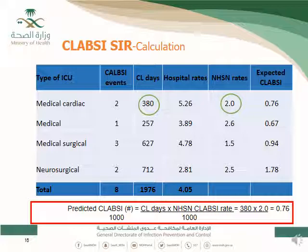Applying the same calculation to medical ICU gives 0.67, medical surgical gives 0.94, and neurosurgical gives 1.78. For neurosurgical: NHSN rate 2.5 × 712 central line days ÷ 1,000 = 1.78 expected events — the expected number if this unit had the same rate as NHSN.